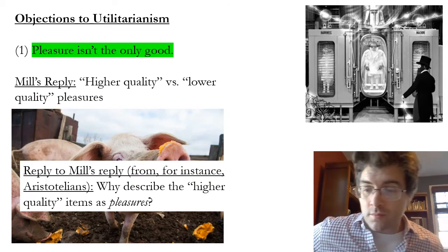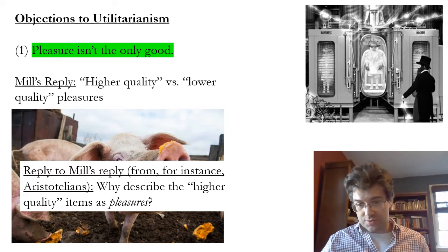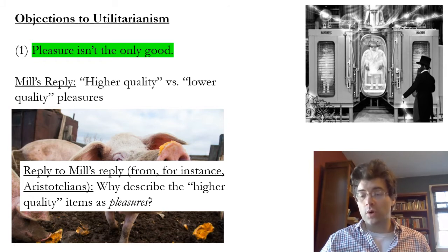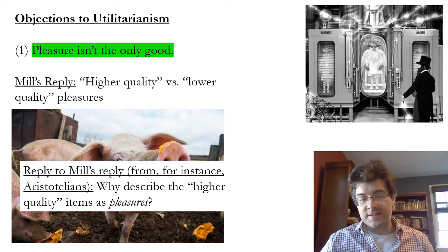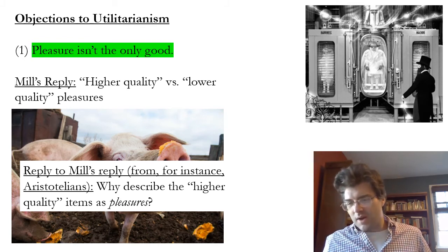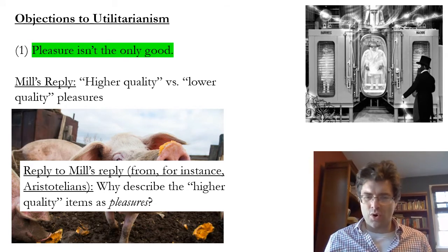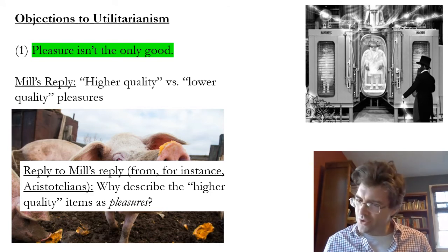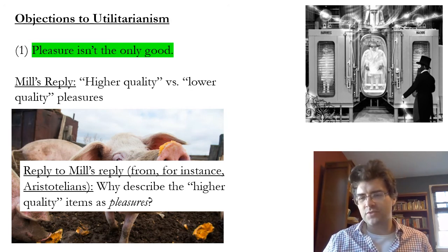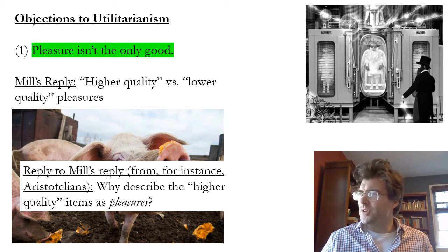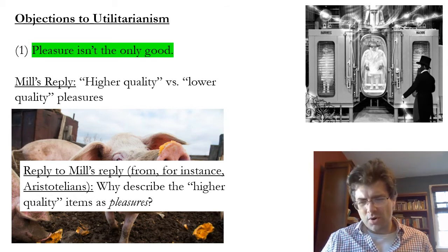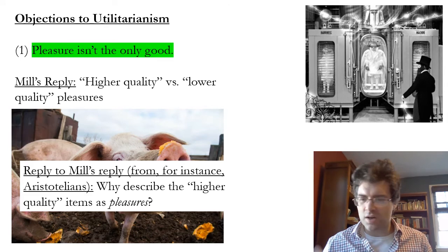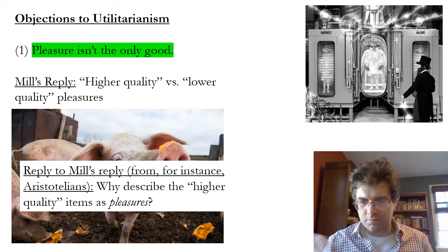There is a possible reply to Mill's reply — the objector can continue to press their case even after Mill's response. They might ask: why do you describe these things you call 'higher quality pleasures' as pleasures at all? Is that really what we value about them? For instance, is pursuing truth valuable because it's pleasurable? Or is it something we think is intrinsically valuable — valuable because of the kind of thing it is, not because it generates any kind of pleasure?